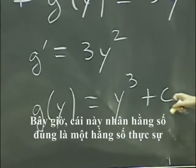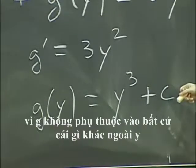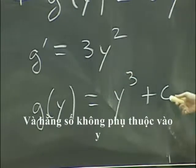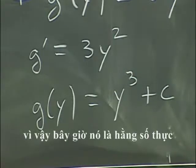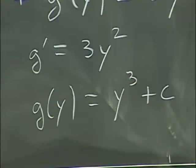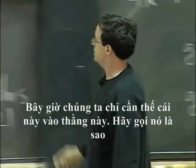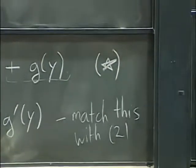Now this time the constant is a true constant, OK, because g did not depend on anything other than y. And the constant does not depend on y. So it's a real constant now. So now we just plug this back into this guy. Let's call him star.